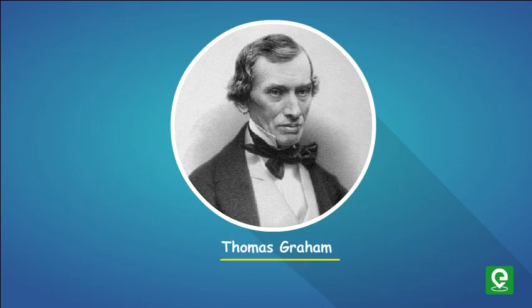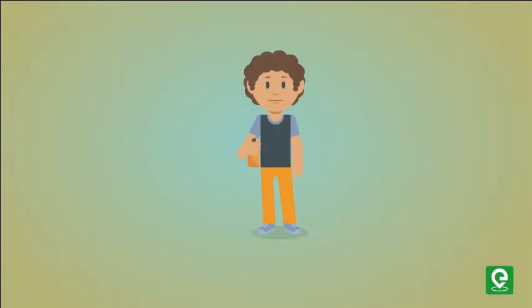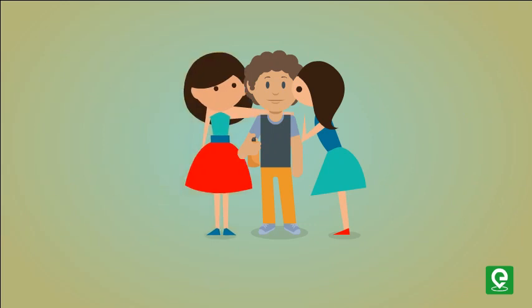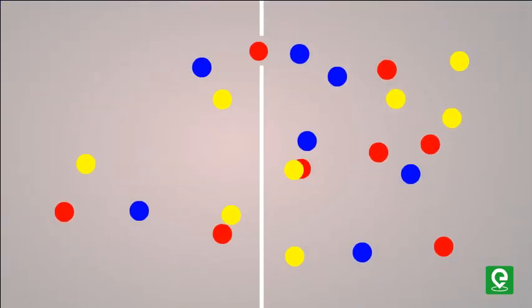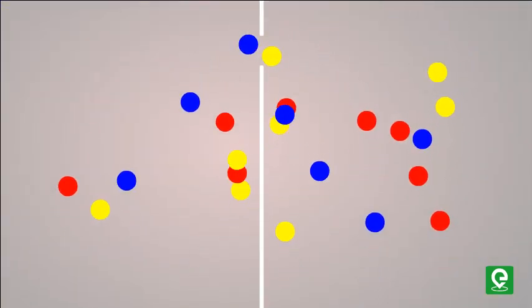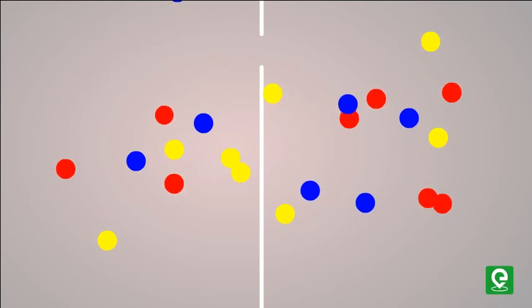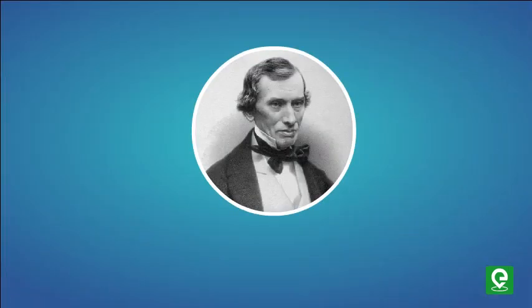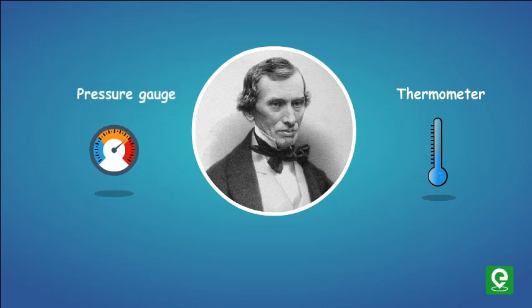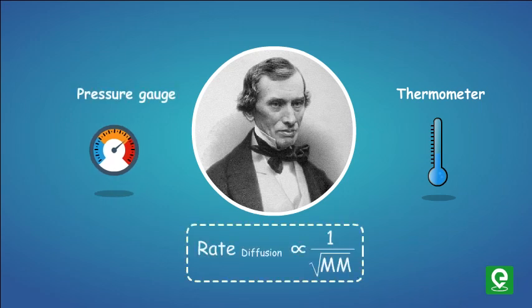Diffusion is a phenomenon which we see while spraying a perfume. Movement of molecules is always from higher concentration to lower concentration. Thomas Graham stated that at constant temperature and pressure, rate of diffusion is inversely proportional to square root of molecular mass of gas. We will learn more about gas in our next topic.